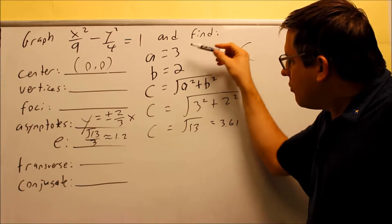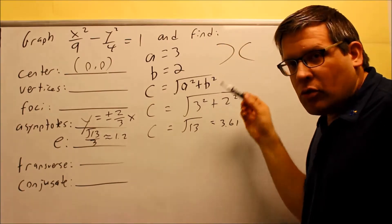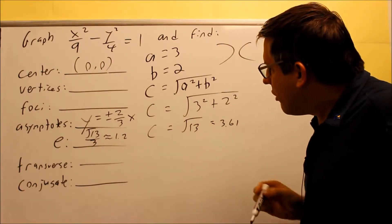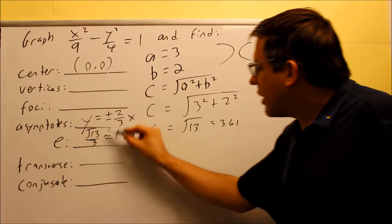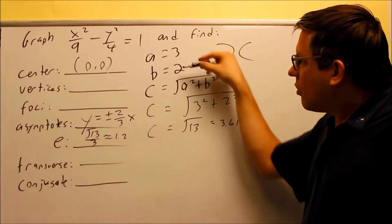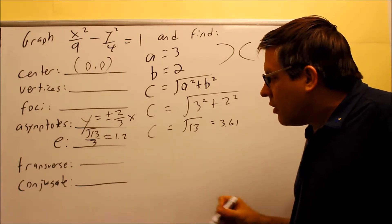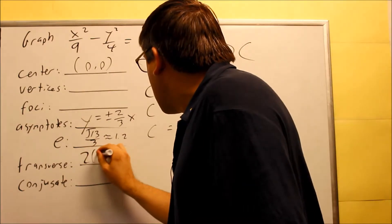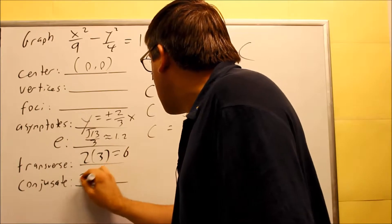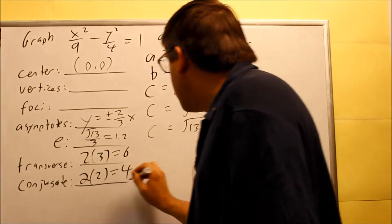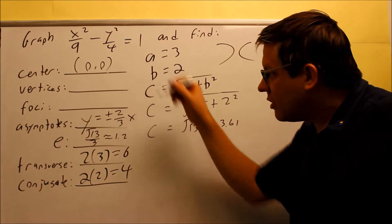Your c is always going to be larger than a and b, so you always end up getting something more than one in that case. The transverse is going to be two times a, two times three is six, and conjugate is two times two which is four.